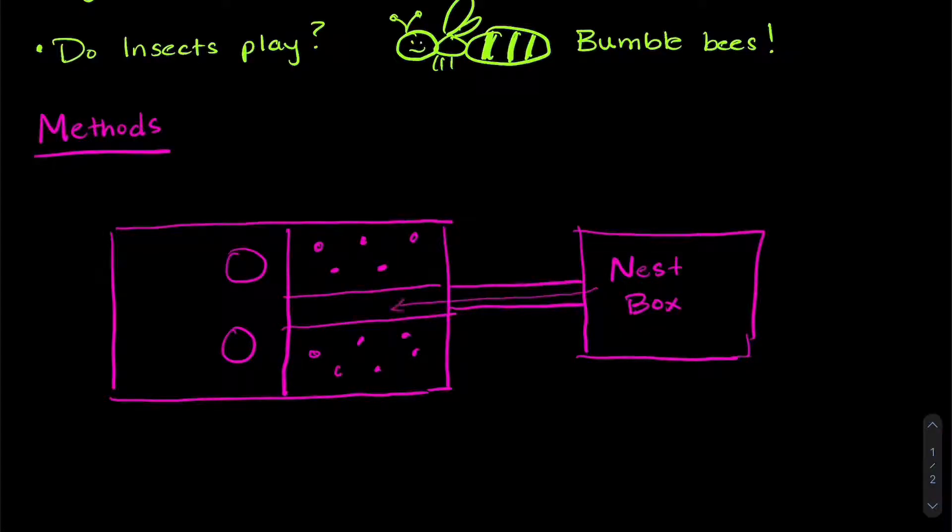There's a tunnel that goes into the experimental arena, and on one side there are little wooden balls that are mobile, and on the other side are little wooden balls that are stationary. If the bees kept going, they found themselves in an arena that had food, both sucrose and pollen.